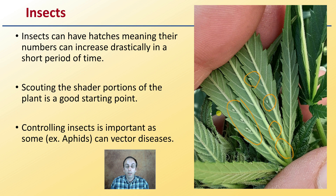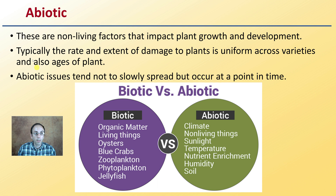Abiotic factors are non-living factors that can impact plant growth and development. Typically the rate and extent of damage to plants is uniform across varieties and also ages of the plant. Abiotic issues tend not to slowly spread, but occur at a point in time — it could be a drastic change in temperature, sunlight, climate, humidity, things like that.